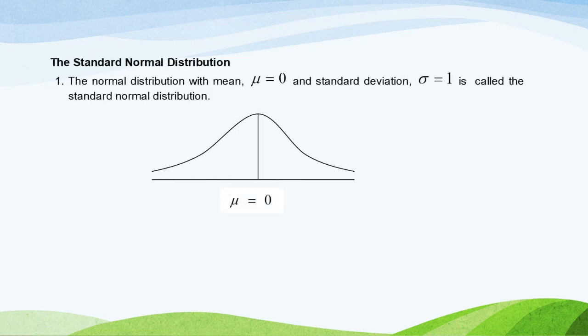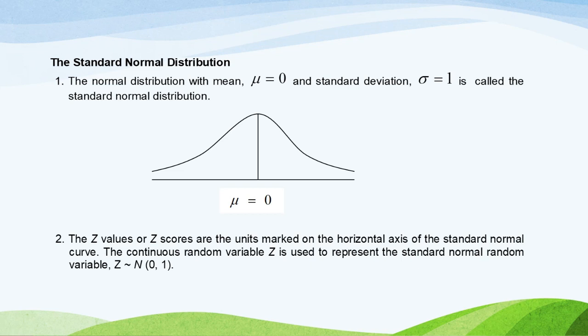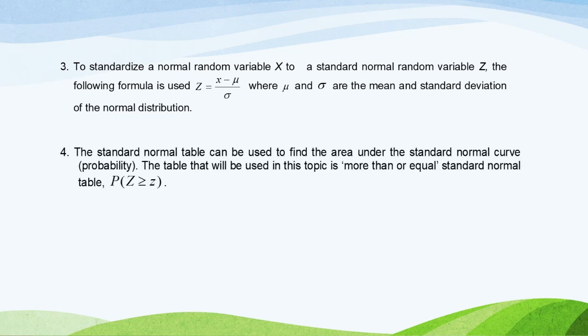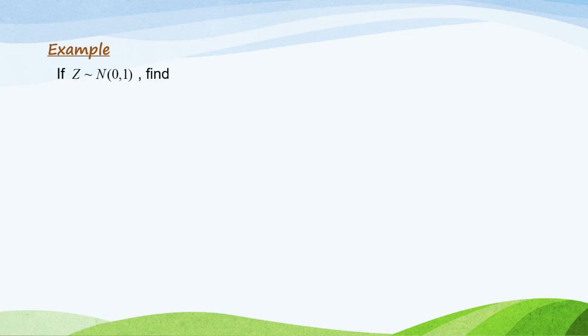Standard normal distribution: the normal distribution with mean 0 and standard deviation 1 is called the standard normal distribution. The z-values or z-scores are the units marked on the horizontal axis of the standard normal curve. The random variable Z ~ N(0, 1). To standardize a normal random variable X to Z, the formula is Z = (X − μ) / σ. The standard normal table can be used to find the area under the standard normal curve, using P(Z ≥ z).